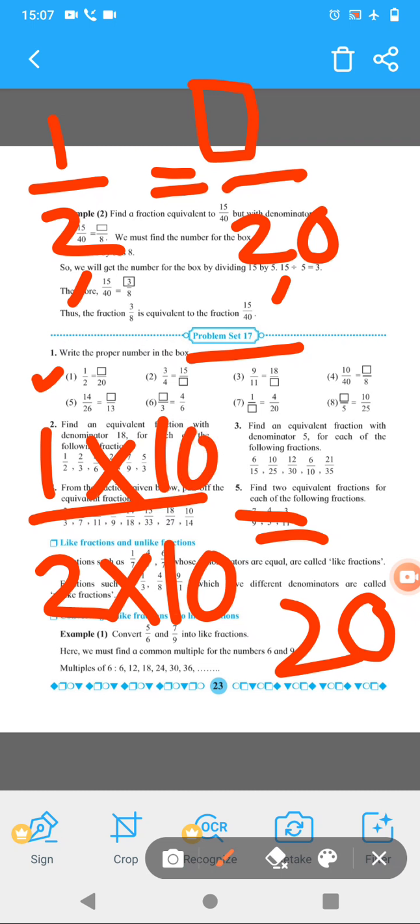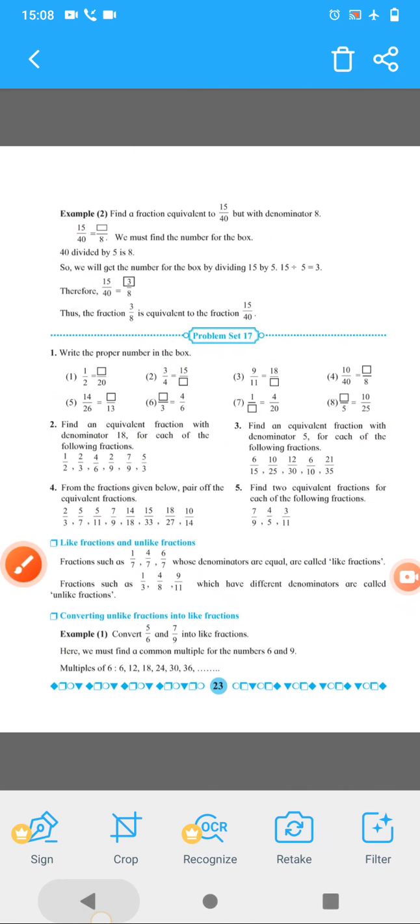So now 1 ko bhi haam logo ko 10 se multiply karna hai. If we are multiplying to this 2 by 10, so here for numerator we have to multiply by 10. It's not like we multiply here by 10 and here by 8. Same number se haam logo ko division karna hai to bhi same number multiplication karna hai. The answer is 10.